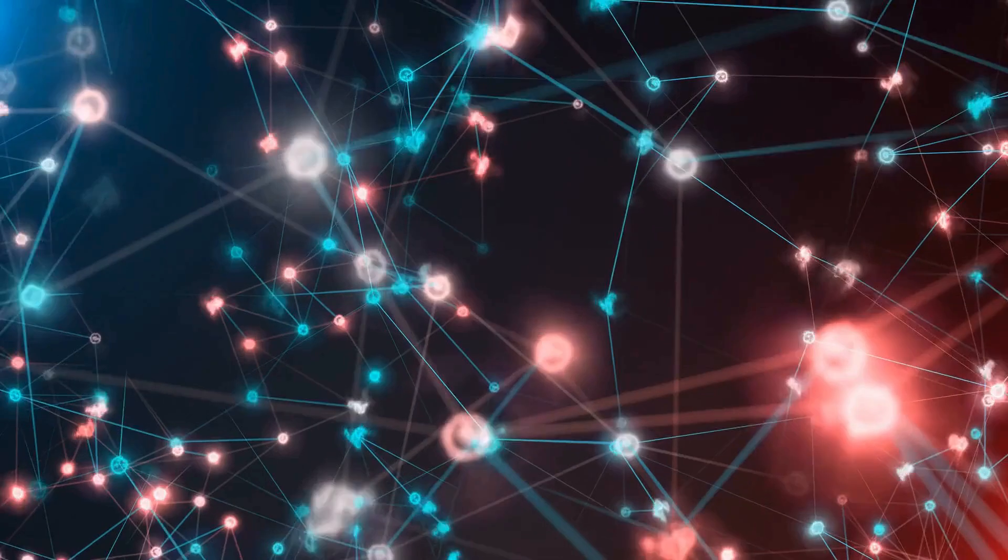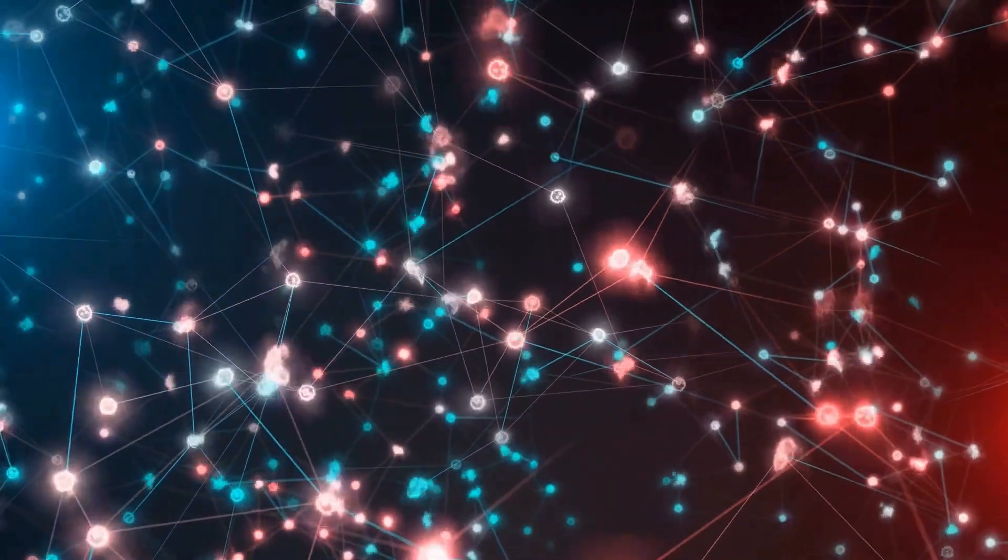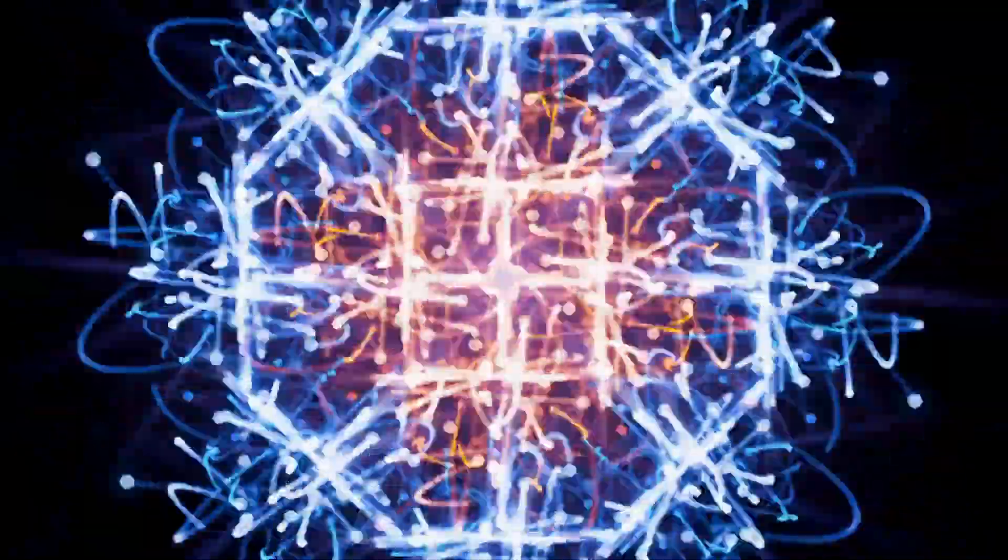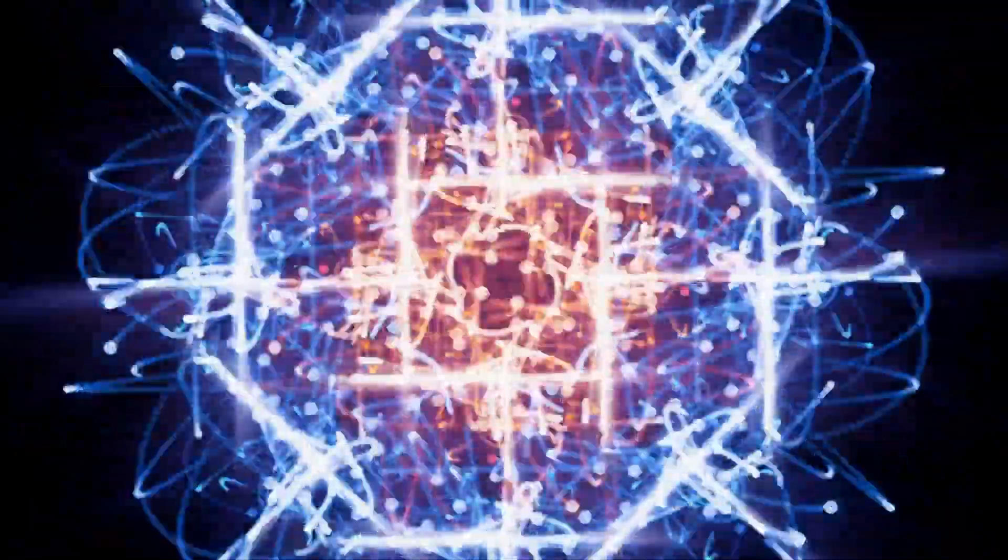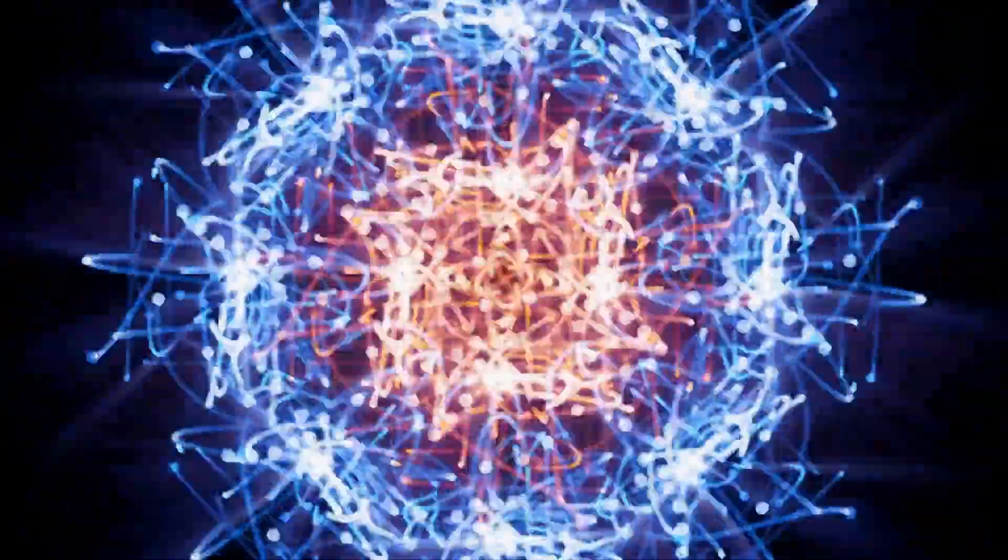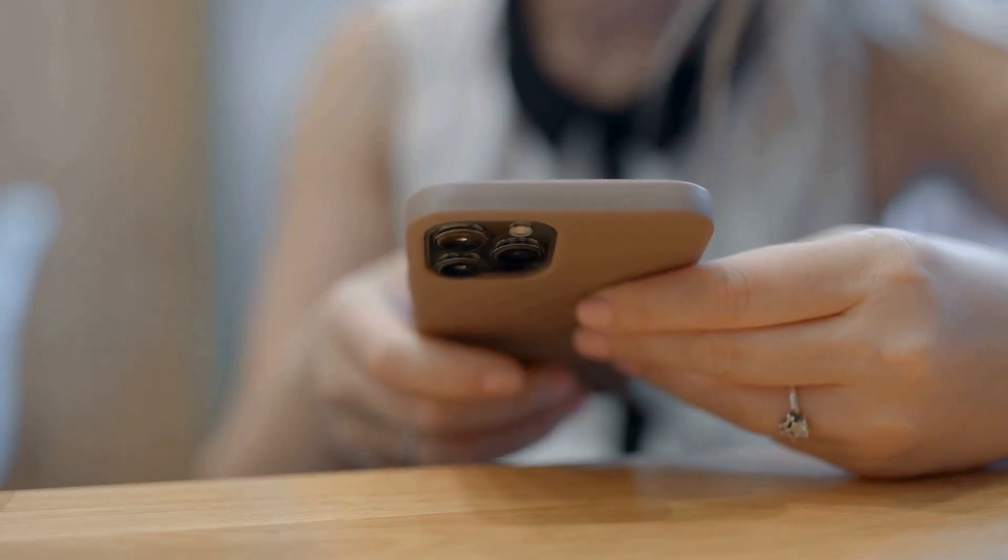So even though atoms are mostly empty space, the world doesn't fall apart beneath our feet, and we don't pass through everything around us. It's the combination of the Pauli Exclusion Principle, electromagnetic forces, and the quantum nature of particles that holds us together and at the same time separates us from the wall.